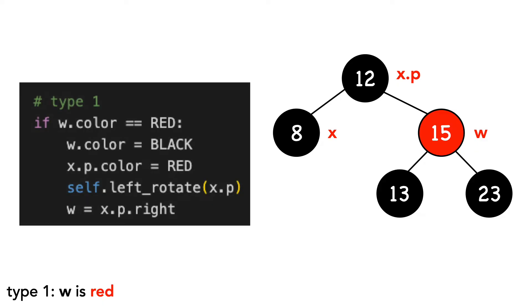Here's the code for type one. We set w's color to black. We set x's parent to red. We call left rotate on x's parent.